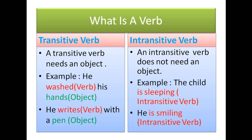When it comes to intransitive verbs, an intransitive verb does not need an object. Let us see through the example: 'The child is sleeping.' 'Is sleeping' is the intransitive verb. Here there is no object being referred to — just an activity is being referred to.